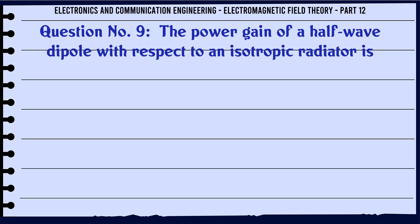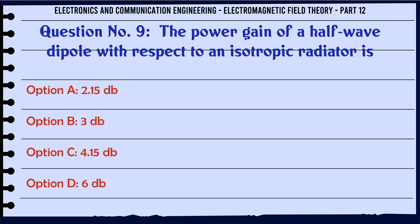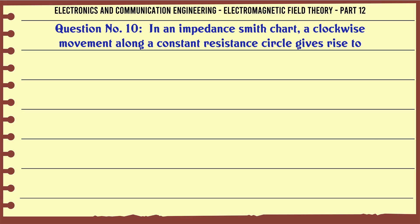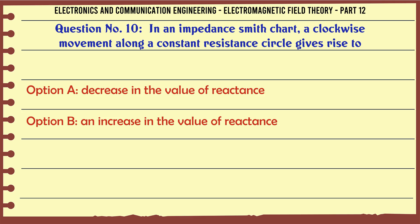The power gain of a half-wave dipole with respect to an isotropic radiator is: A. 2.15 dB, B. 3 dB, C. 4.15 dB, D. 6 dB. The correct answer is 2.15 dB.